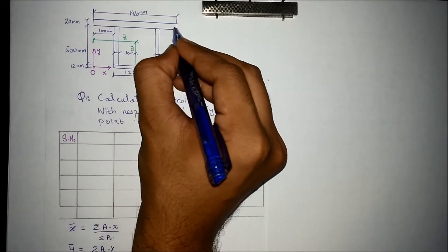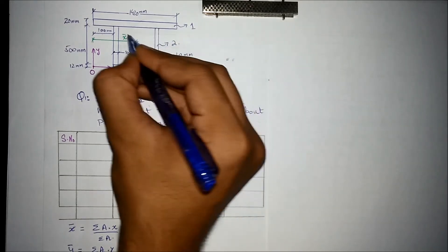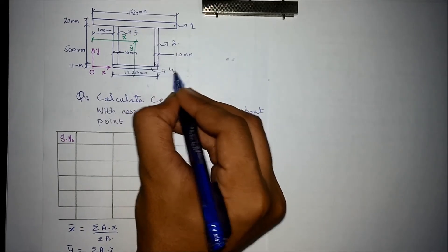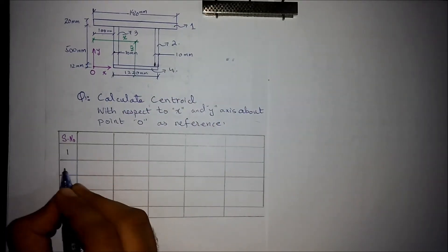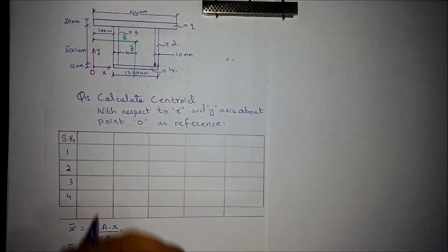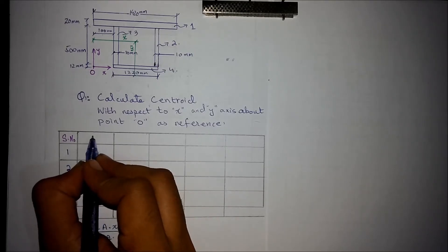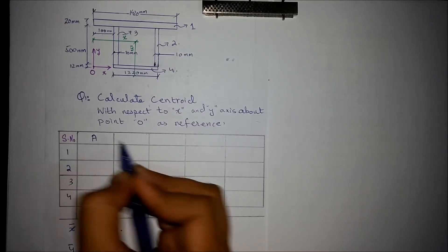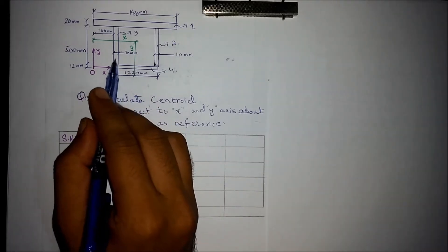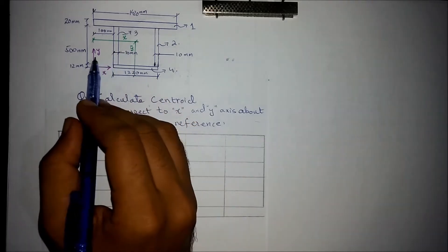Let's name the individual shapes in the form of numbers. This is area number one, this is area number two, this is area number three, and this is area number four. According to these names, for the formula we need to find out the area and the distance x for each individual shape's centroid with respect to the x axis.